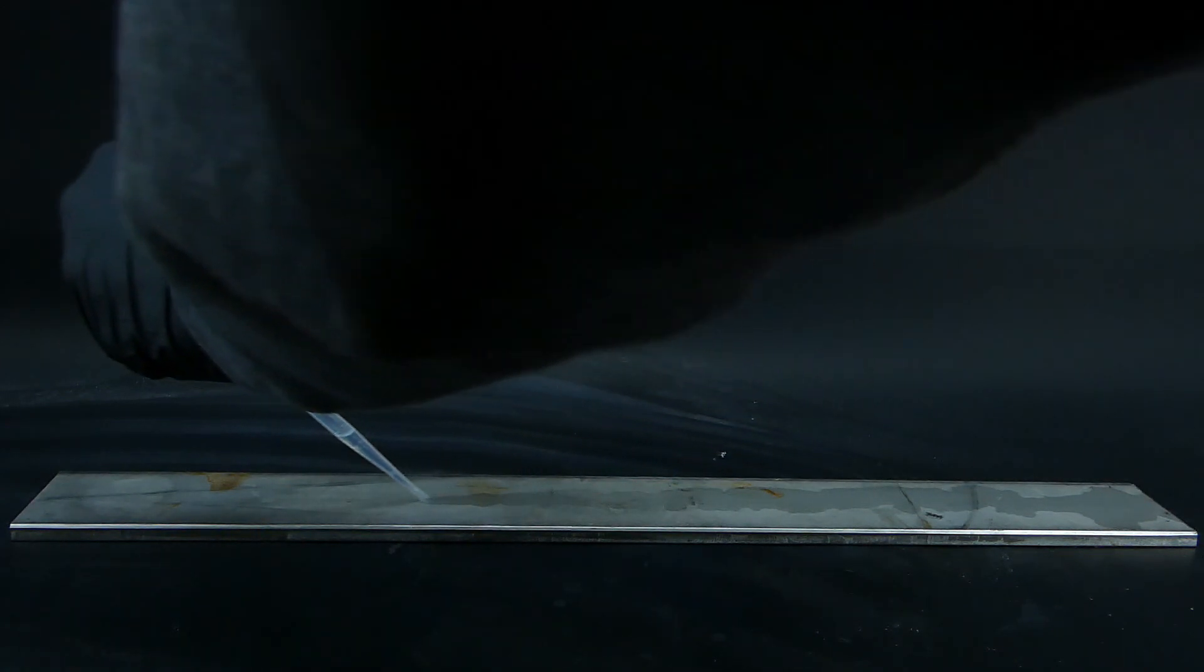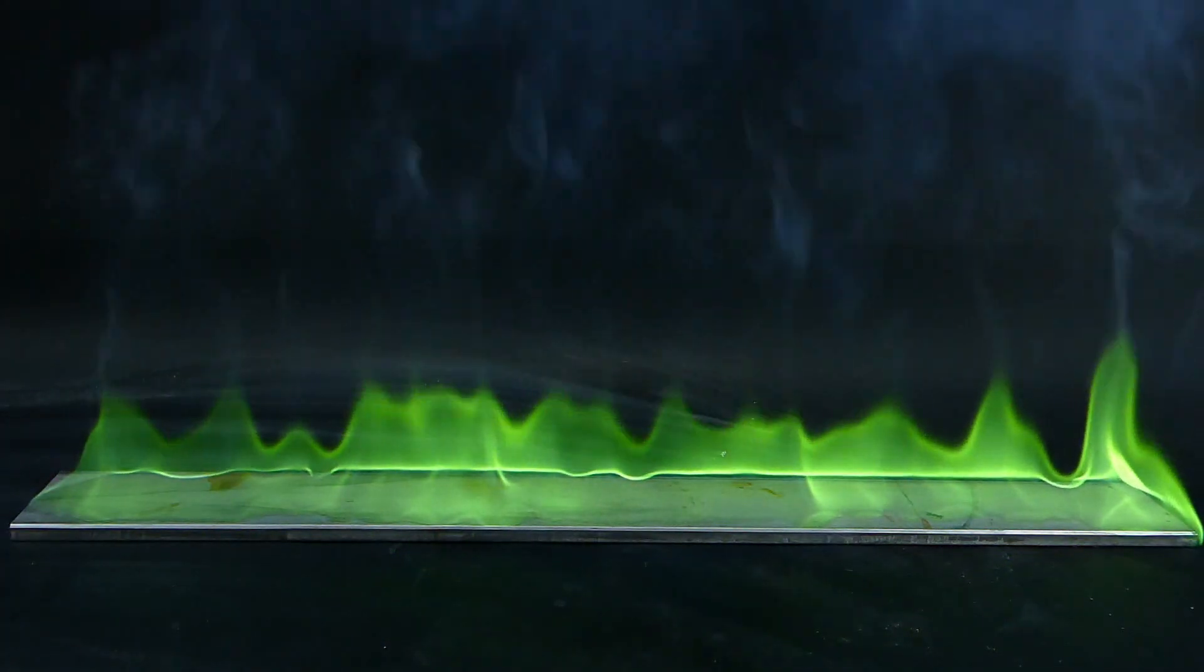For another experiment, I got a chunky piece of metal to avoid setting my fume hood on fire and poured some of the trimethyl borate on it. After igniting it, the fire quickly spread, but in slow motion, I captured a nice shot of the fire expanding.